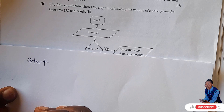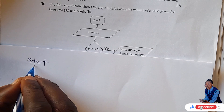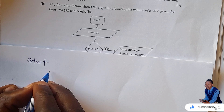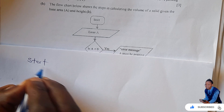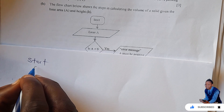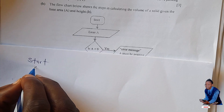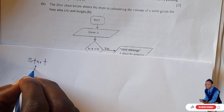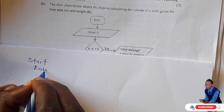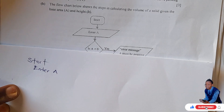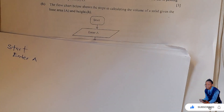Then enter A — just indent, move the 'enter A' a little bit inside. Usually for the second line, just say 'enter A'. Okay, then you go to the next.